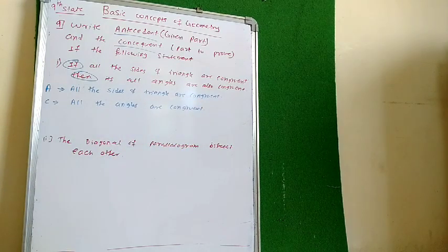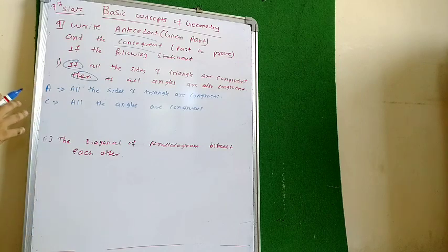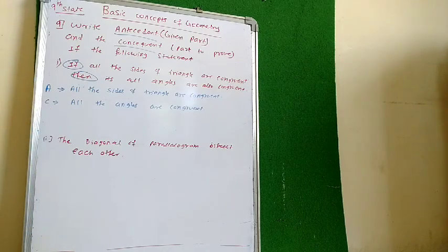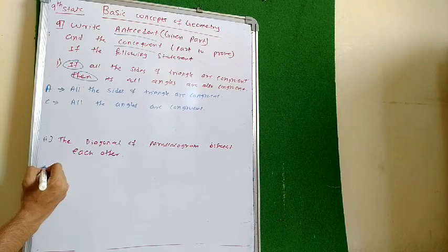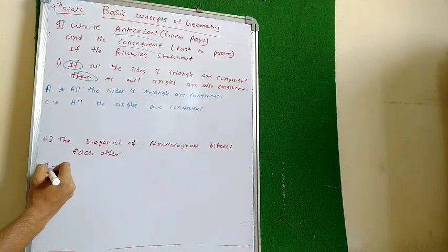When you will go further in geometry, you will have such sums where something is given and something is to be proved. Now the second one: diagonals of the parallelogram bisect each other. Now we don't have 'if' and 'then', so we need to identify it.